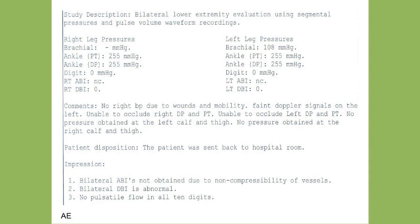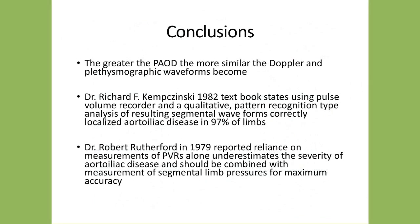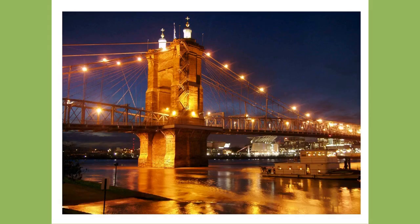In conclusion, the greater the peripheral artery disease, the more similar the Doppler and plethysmography waveforms become. Kuczynski stated in 1982 that using pulse volume recordings and qualitative pattern recognition of segmental waveforms, he could correctly localize aorto-iliac disease in 97% of limbs. Bob Rutherford in the American Journal of Surgery in 1979 reported that reliance on PVR measurements alone underestimates the severity of aorto-iliac disease and should be combined with segmental limb pressure measurements for maximal accuracy. There are nine practice cases available for you to test your interpretation skills.